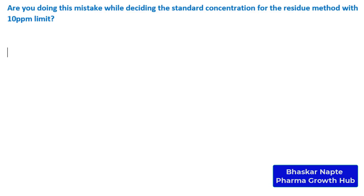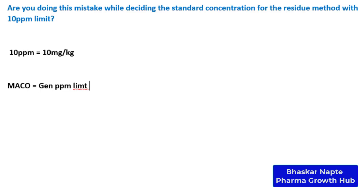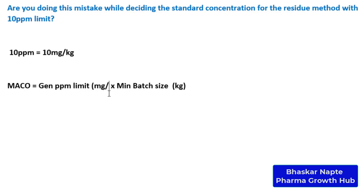The general ppm limit we are considering is 10 ppm. Can I express 10 ppm in another unit? Yes — 10 ppm is nothing but 10 milligram per kg. The MACO under the general ppm limit approach is calculated as: MACO equals your general ppm limit multiplied by the minimum batch size of the next product in kg. The general ppm limit must be expressed in milligram per kg, giving MACO in milligram.